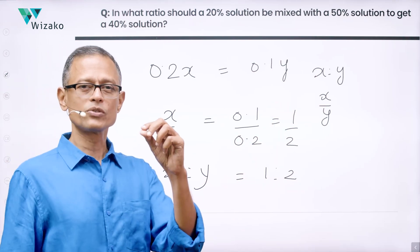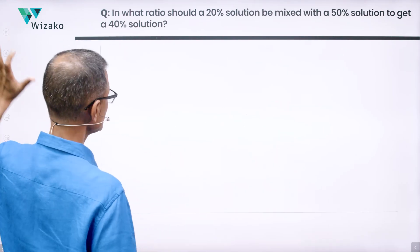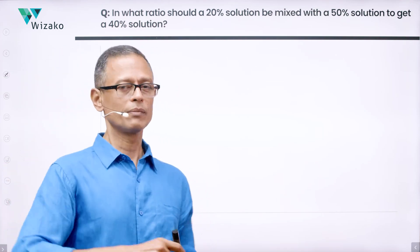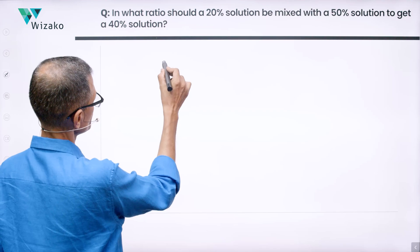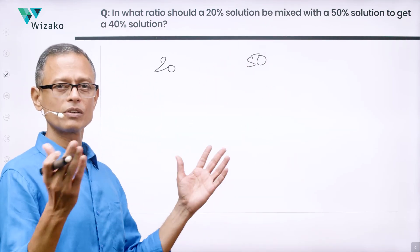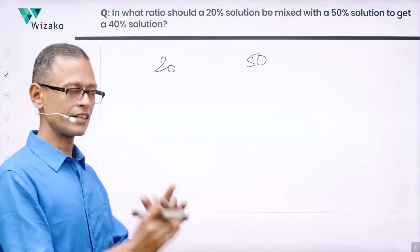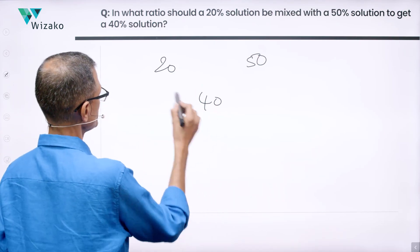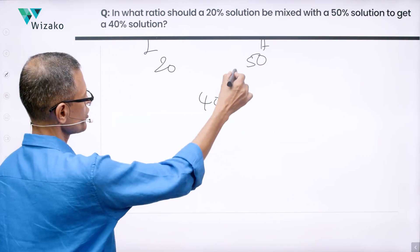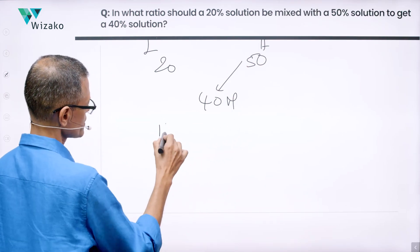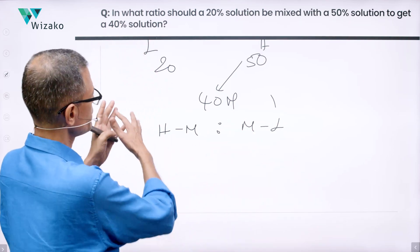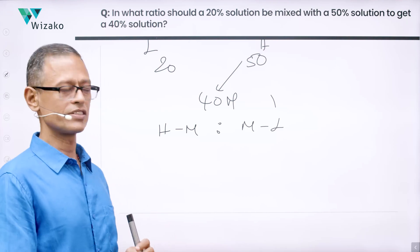Now let's see if we can solve it using method 2. This is called rule of allegation. We have done it extensively in our online course, but I'll quickly run you through this to get you familiar. The low concentration is 20%, so let's write it as 20. The high concentration is 50. So what is the mean or the weighted average concentration that we have? We have a concentration of 40. So low, high, and let's call it as the mean that we have. What ratio should we mix it? High minus mean is to mean minus low. But this pictorial representation actually makes it easy for you to get to the answer in a jiffy.